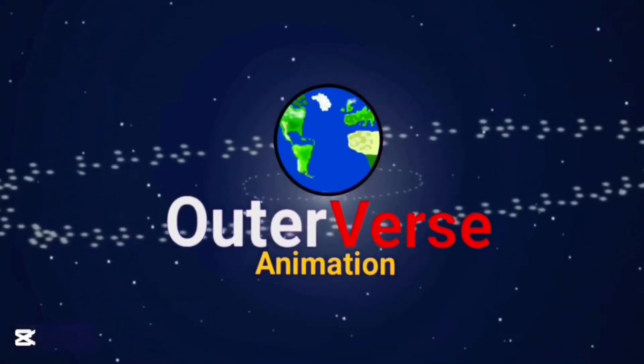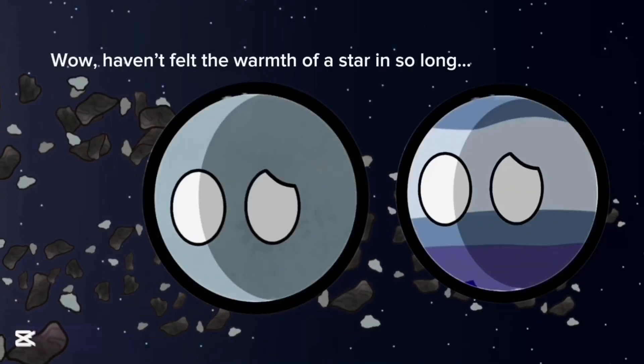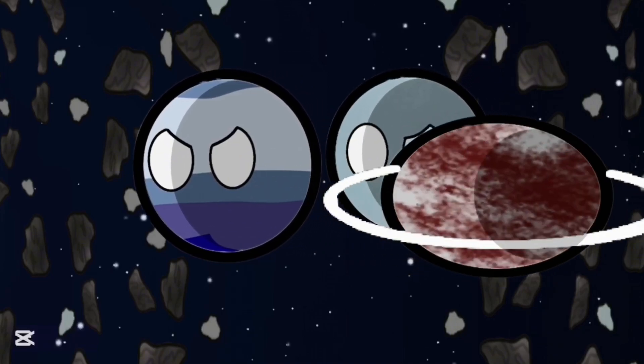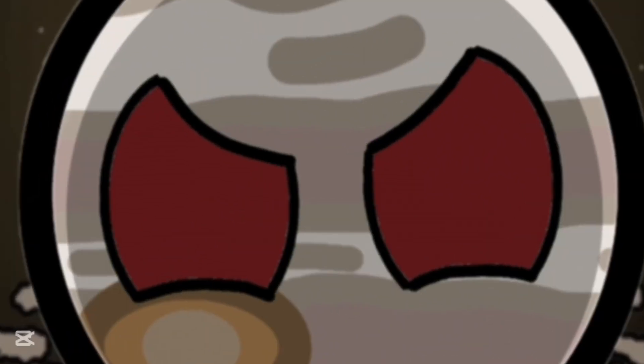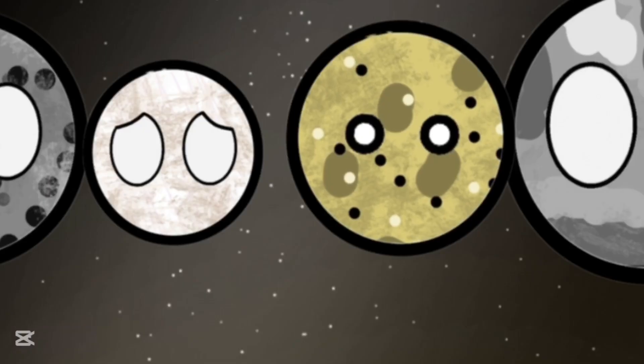Previously on Outerverse Animation, two mysterious exoplanets pass through the Kuiper belt on a mission to settle around a new star. Meanwhile, Jupiter teaches his moons a hard lesson about his dark side.